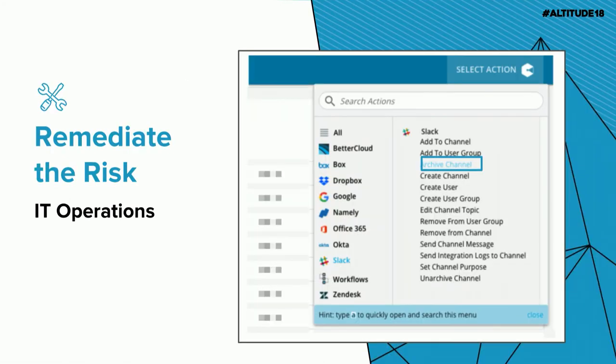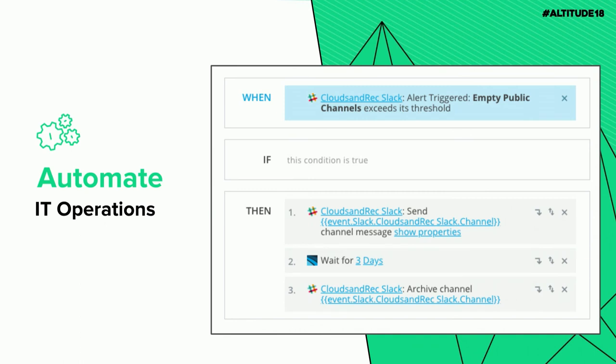From there you can select all those channels, go to the action engine menu, and archive the channel — quick and painless. To automate this, one of the more common workflows I set up for customers: we have an alert for when a channel becomes empty. When it fires, send a message to the channel saying 'Is there anyone home? If not, this channel will be gone in three days,' wait three days, and then archive the channel.